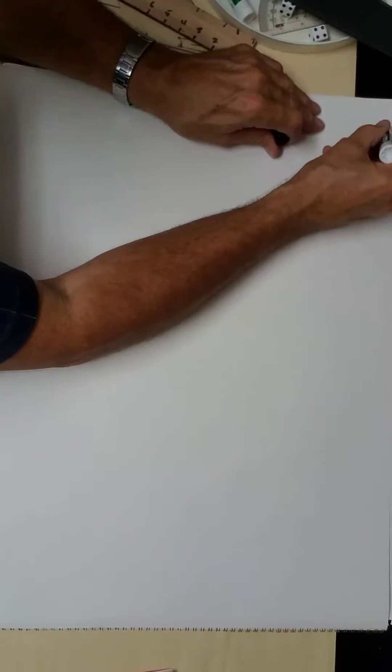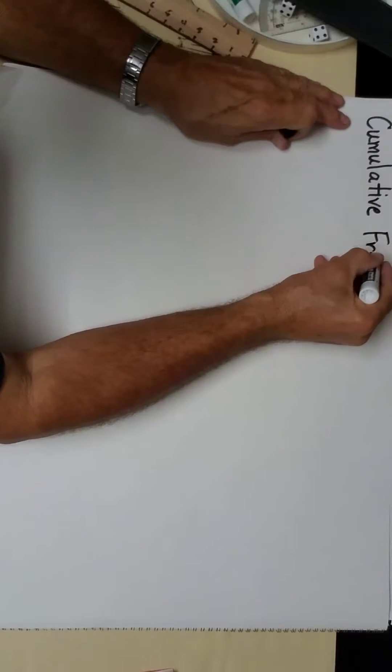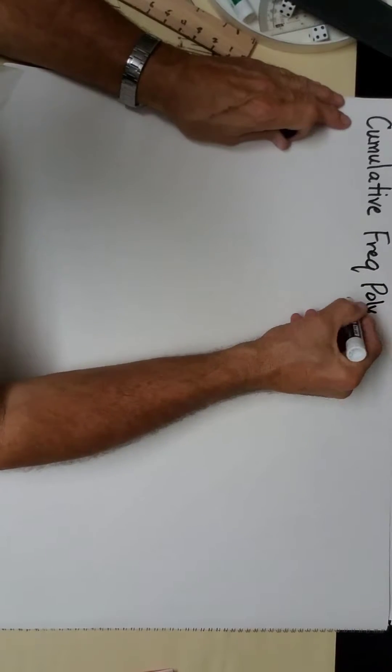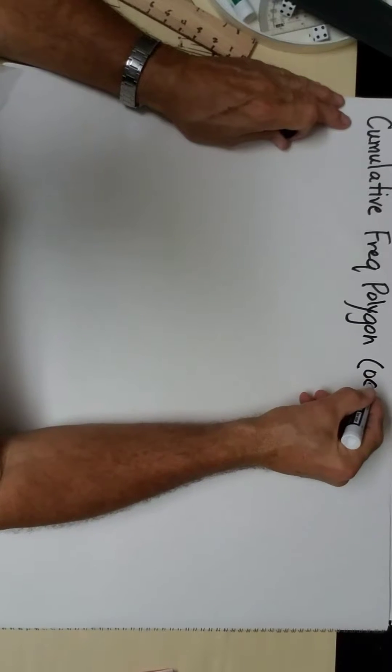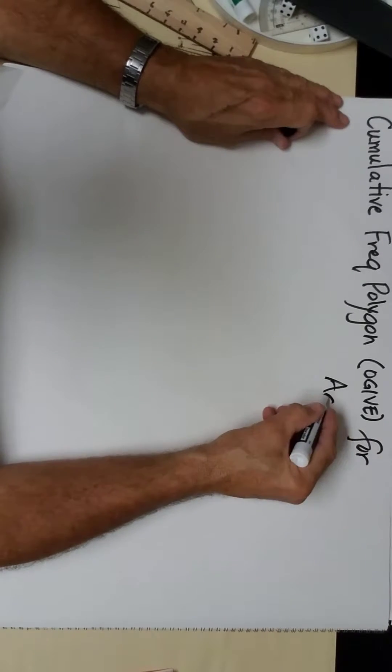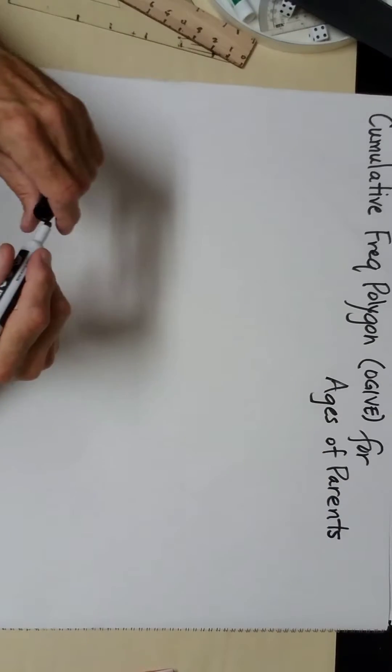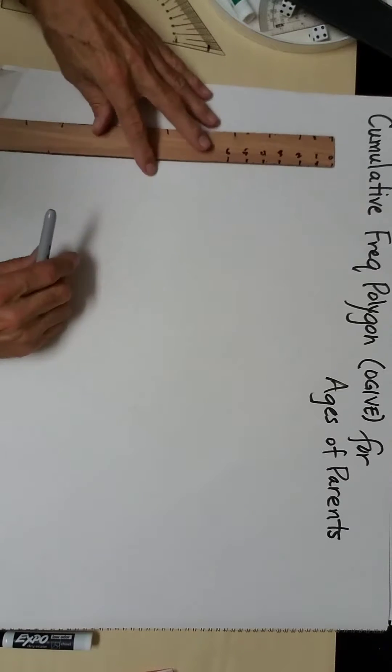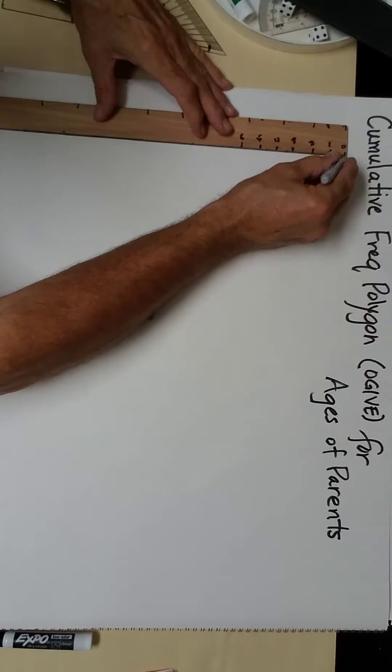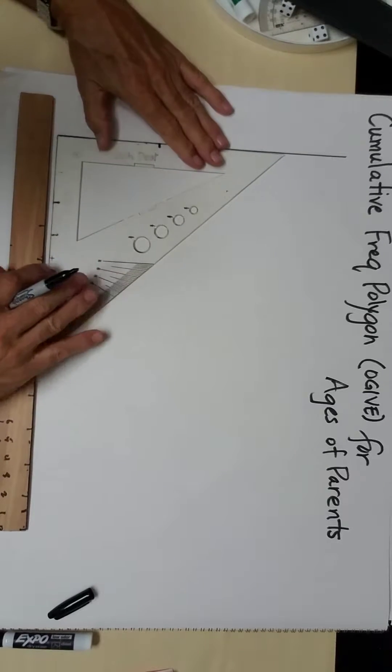This is a cumulative frequency polygon using cumulative values, called an ogive, for ages of parents. The vertical scale uses cumulative frequencies. The horizontal scale uses class boundaries.